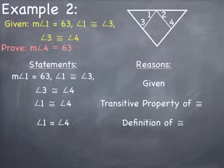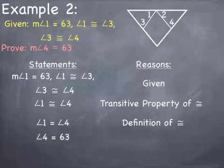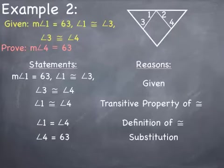Using the first statement that the measure of angle 1 equals 63, I am able to substitute and conclude that the measure of angle 4 equals 63 degrees, because I can substitute 63 in place of angle 1. My last statement is what I was trying to prove, so I am done writing this proof.